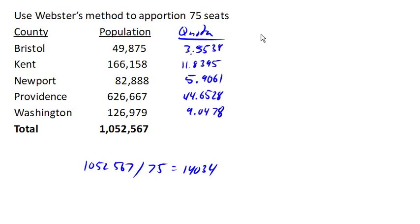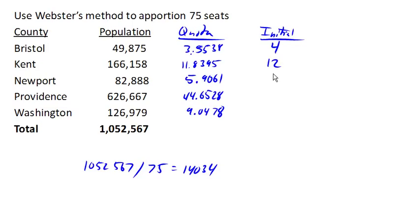With Webster's method, the initial allocation comes from rounding the quotas, not chopping them. So we round 3.55 to 4, 11.8 to 12, 5.9 to 6, 44.65 to 45, and 9.04 rounds down to 9. If we add those up, they add up to 76.